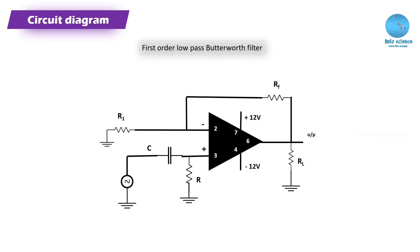The new connection is the inverting terminal, the second terminal, connected to ground with R1 in between. R1 and Rf resistor ratio determines the pass band gain. The R1 and Rf values are the same. The next connection is the third pin, the non-inverting terminal, which connects to the function generator directly through a capacitor.